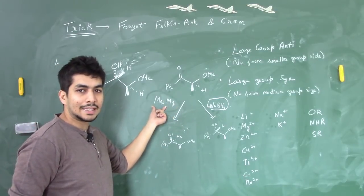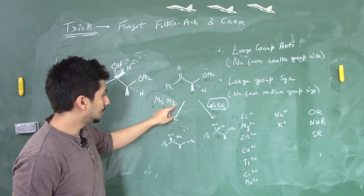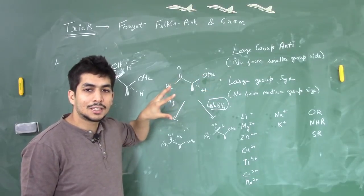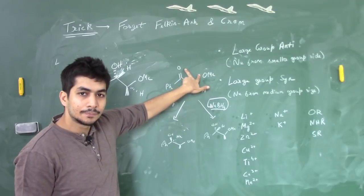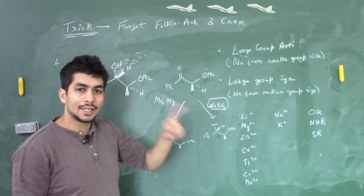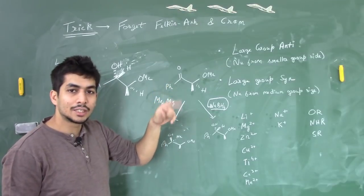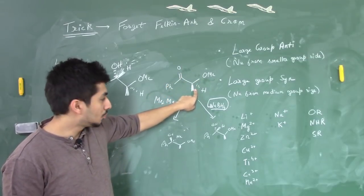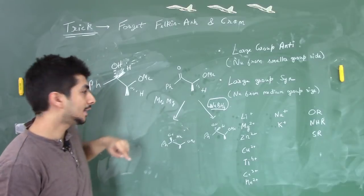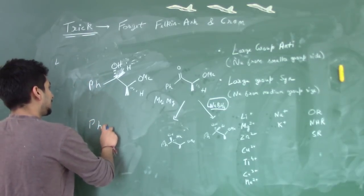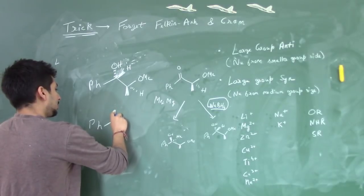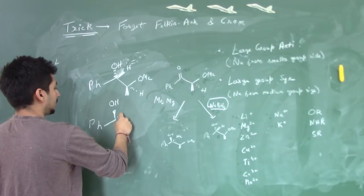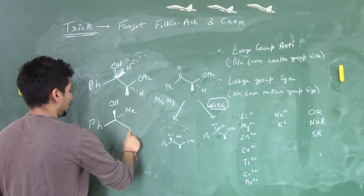With Me2Mg, the nucleophile is Me⁻. Since magnesium is a chelating metal and there is a methoxy group (Z group with lone pair), chelation takes place. Both the Z group (OMe) and the ketone are syn to each other. Because chelation reverses the rule, the methyl nucleophile attacks from the smaller group side (hydrogen, which is below the plane). So methyl goes below and OH forms above the plane — the opposite stereochemistry to the NaBH4 case.